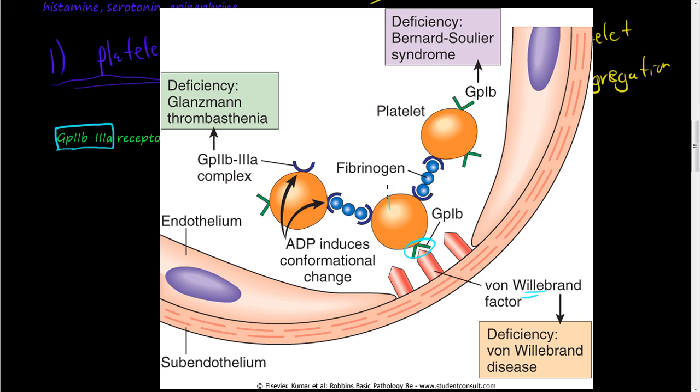Then they'll start secreting these granules, those granules that we talked about. And then the ADP will start making a conformational change on these other complexes that cause them to bind to fibrinogen.